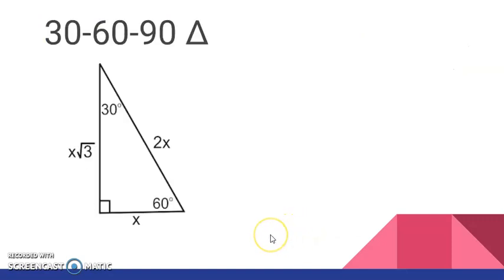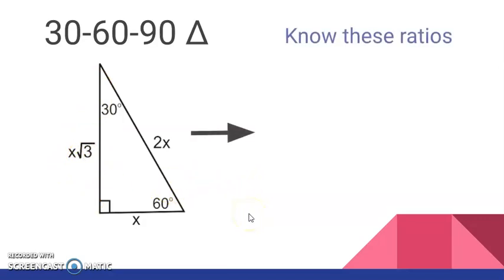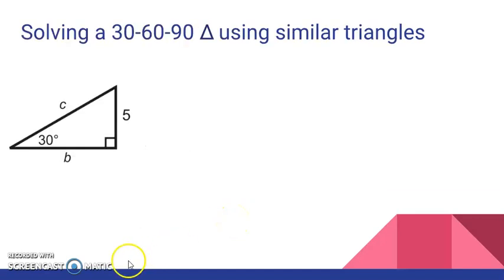Now, knowing that, these are the ratios we have. We know that if the piece across from the 30 is X, then the hypotenuse must be twice that, and the height must be the square root of three times that. Let's get rid of those X's and just focus in on the ratios. Let's memorize the 1, the 2, and the square root of three. Now, how do we know this? Let's put that to use.